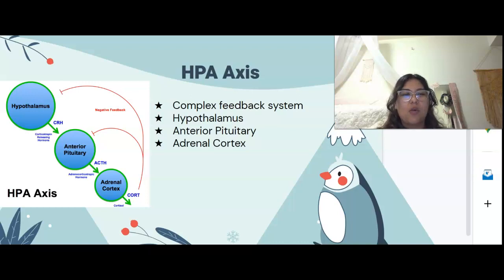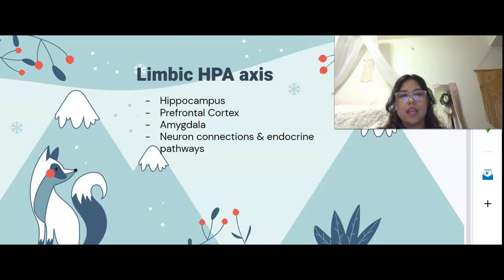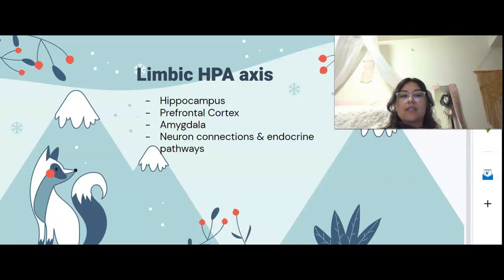That's the hormonal and very biological aspect. I also wanted to cover the limbic HPA axis, which is regulated via the hippocampus, the prefrontal cortex, and the amygdala via neural and endocrine pathways. The limbic system regulates emotions and memory, and it's important in HPA depression. So these are the biological impacts of stress.